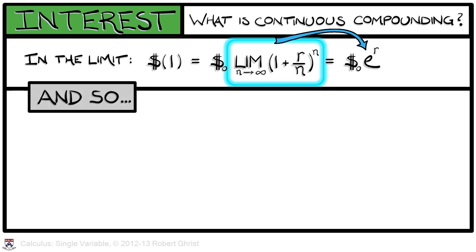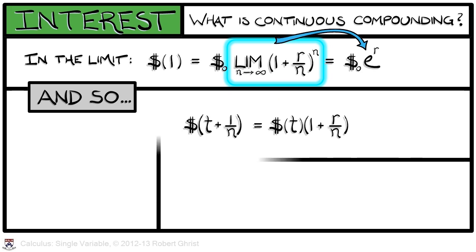This is a hint that the standard linear differential equation is really behind what's happening in continuous compounding. Let's see how that falls out. If we look at the amount of money at time t plus a small increment, one over n, then, according to our previous reasoning, this is the money at time t times quantity one plus r over n.